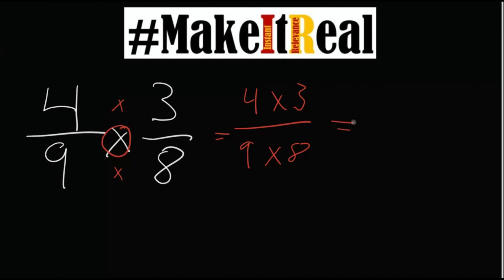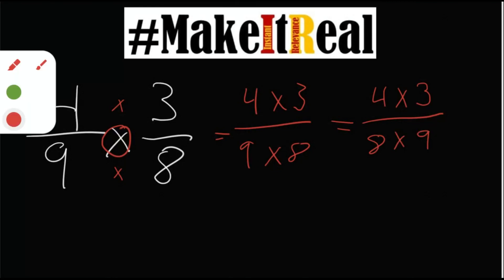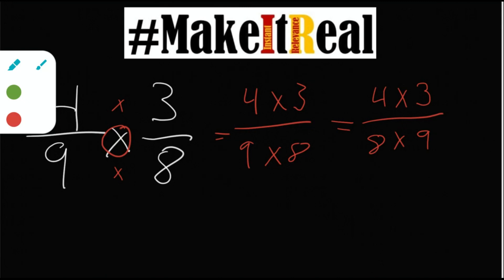And that's where their thinking becomes part of the process and they might leave the 4 times 3 on the top and be able to explain to us that they're using the commutative property to rearrange 9 times 8 as 8 times 9. Because when they do that they are then able to look vertically which makes perfect sense to them when it comes to simplifying fractions. 4 over 8 is 1 half. 3 over 9 is 1 third. And come up with a final answer of 1 sixth.